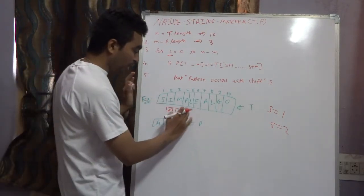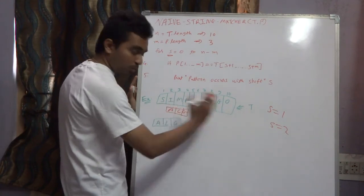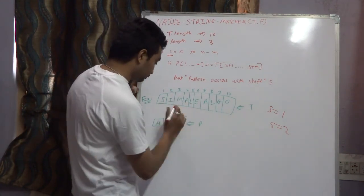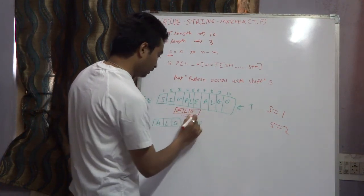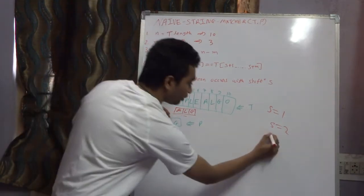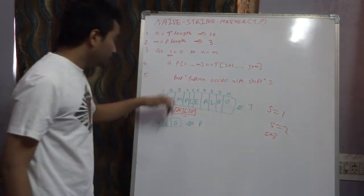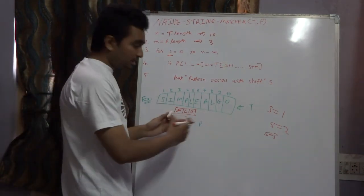Here you can see at S equals 3 the pattern doesn't occur. We repeat this process until the pattern occurs or pattern matches.